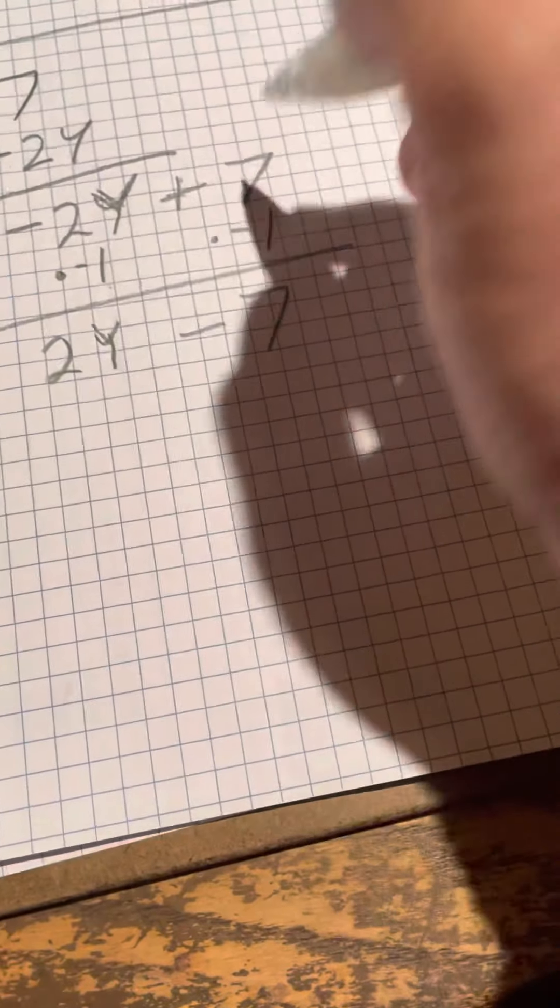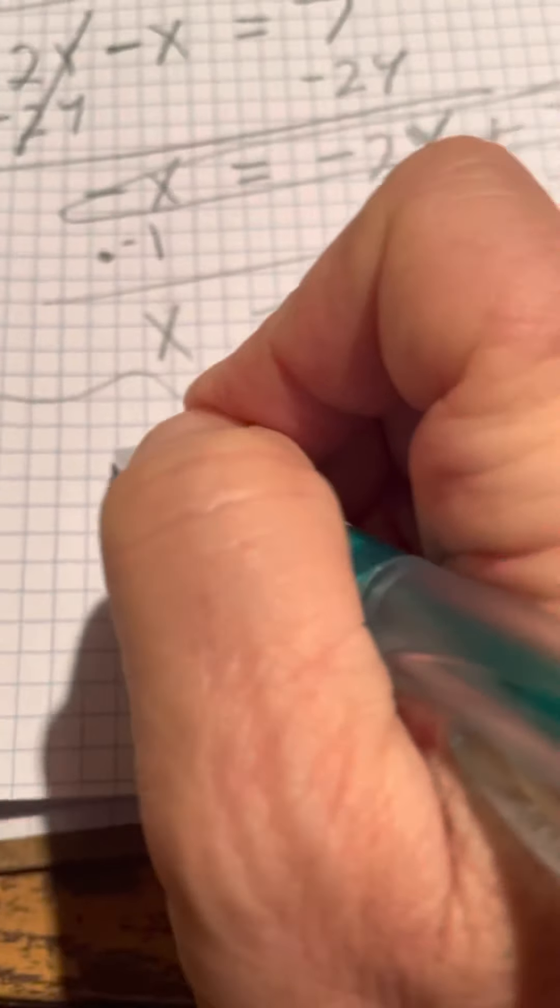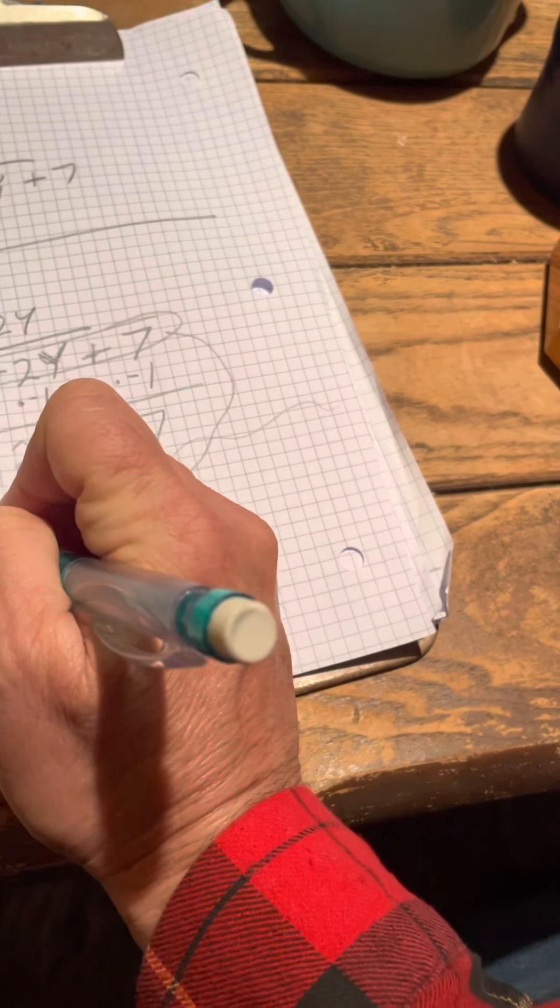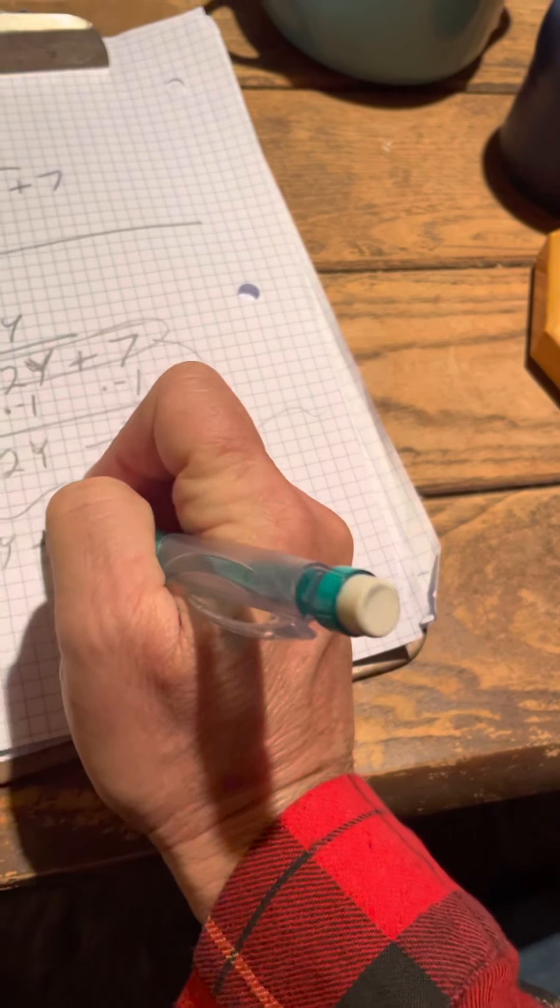Now, I'm going to show you a different thing. Let's take this right here and move it down here. I'm going to show you another way of doing this. You might like this. Negative x equals negative 2y plus 7.